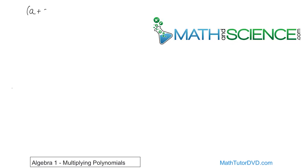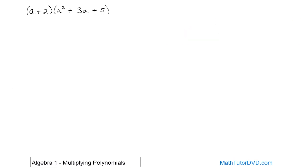What if we had a plus 2, and that was going to be multiplied times a squared plus 3a plus 5? This is not a binomial times binomial like last time. This is a binomial times a trinomial — 2 terms times 3 terms — and you could have even more complicated problems.